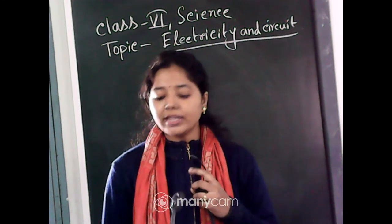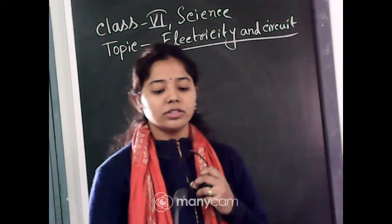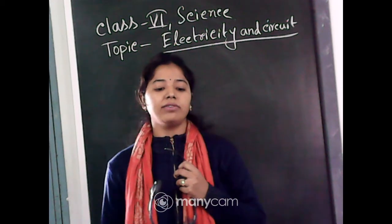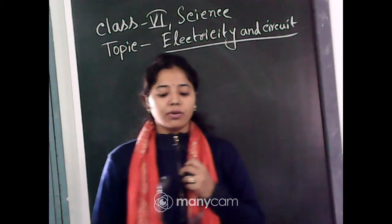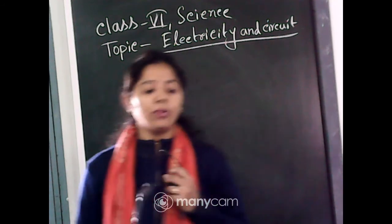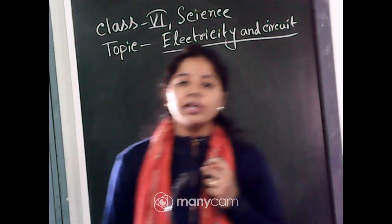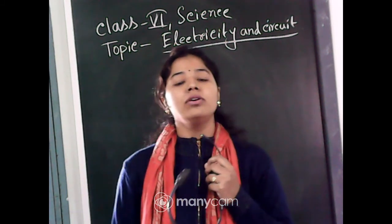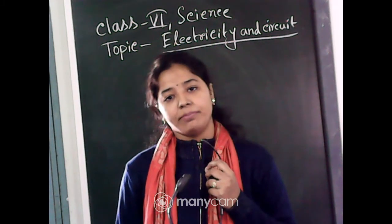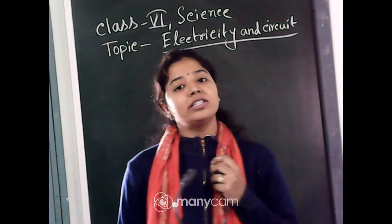Now let's come to electric conductor and insulator. In the previous class, I gave you a short definition. Conductors are materials which allow electricity to pass through them. Insulators are just the opposite — materials that do not allow electricity to pass through them. On the basis of conductivity of heat also, we can divide materials into two categories: conductor of heat and insulator of heat.